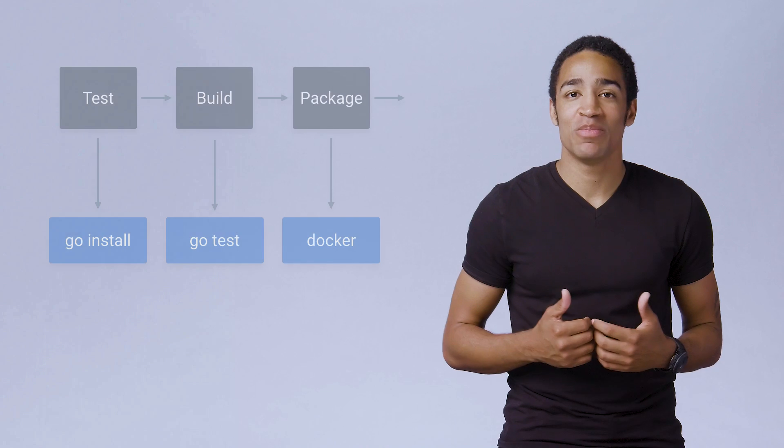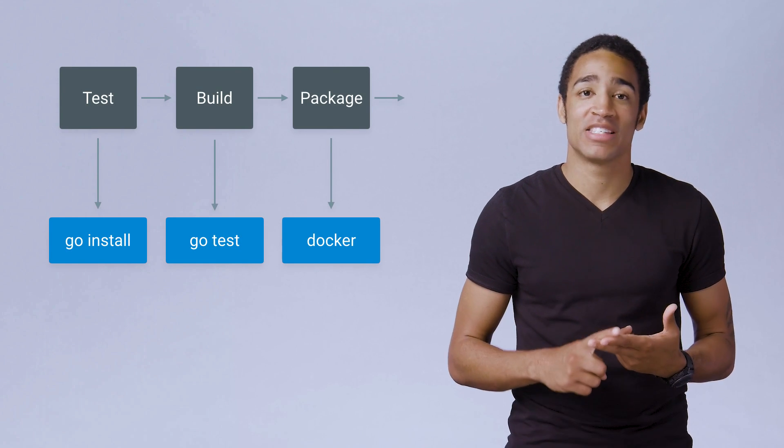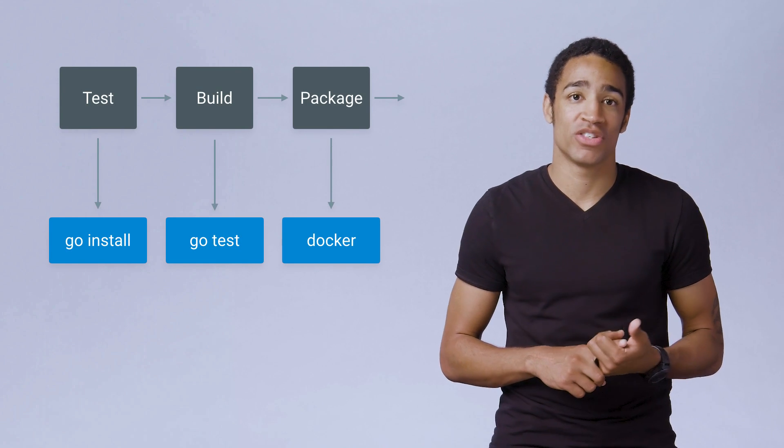To illustrate this better, let's use GCB to build, test, and package an example Go application. When I submit the build to GCB, my source code is pulled into a workspace directory. From there, GCB runs the commands that I specify over the contents of that workspace directory.